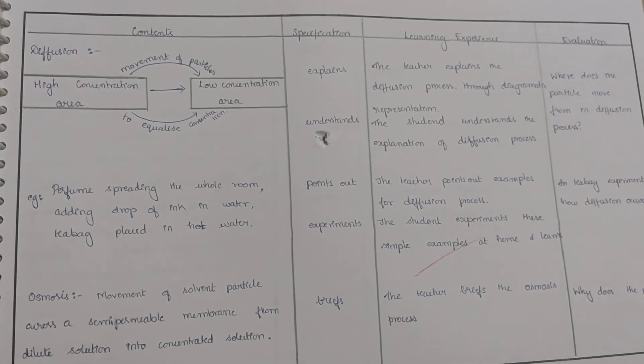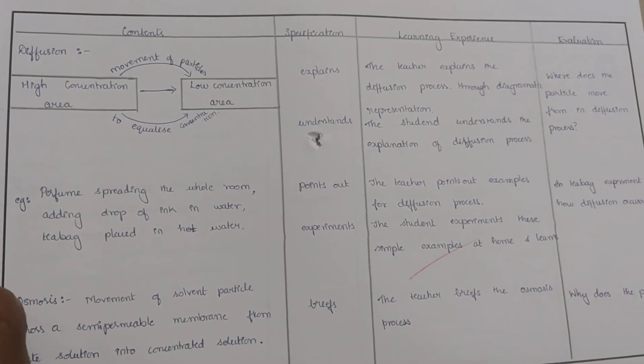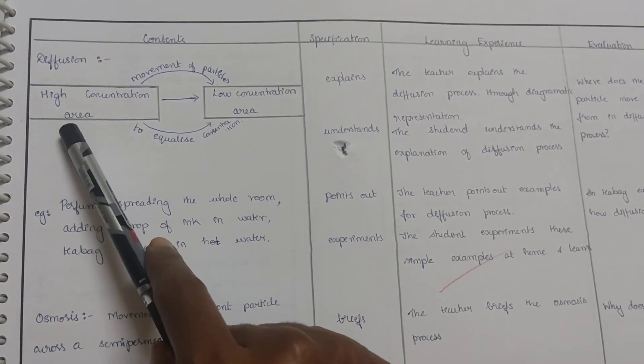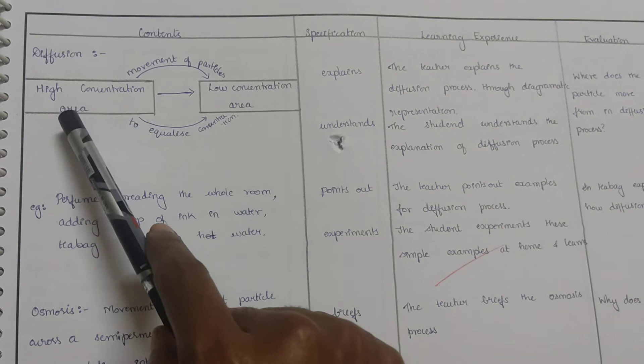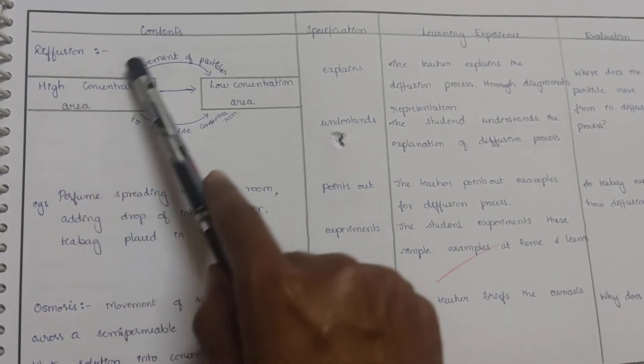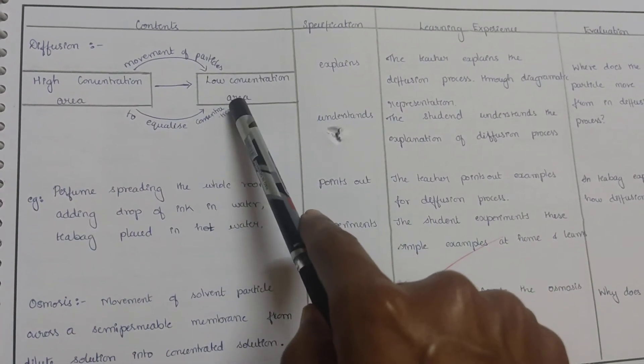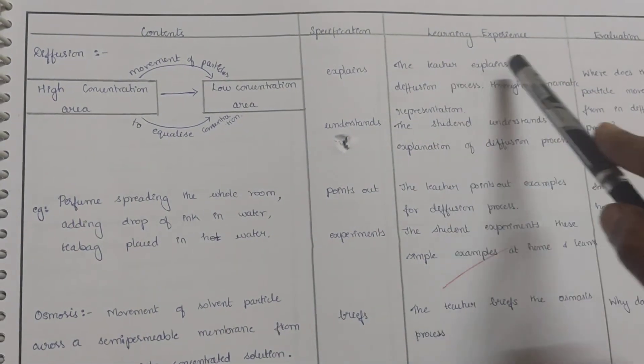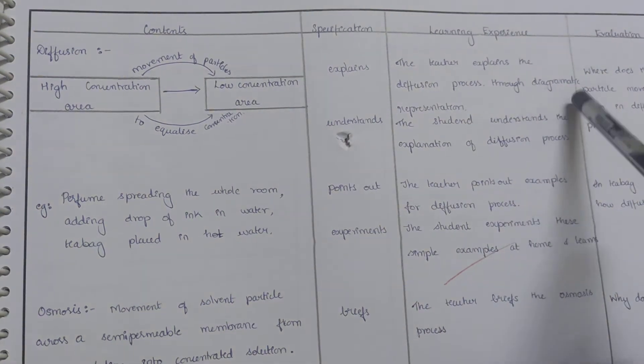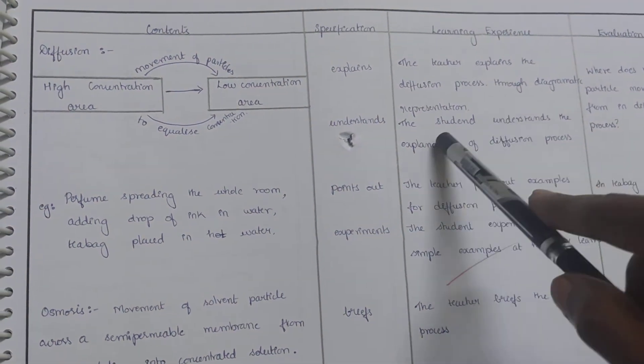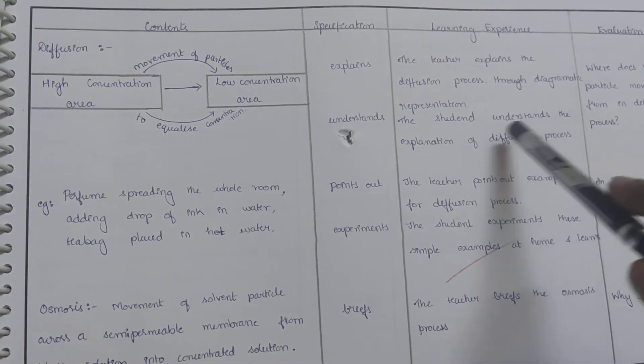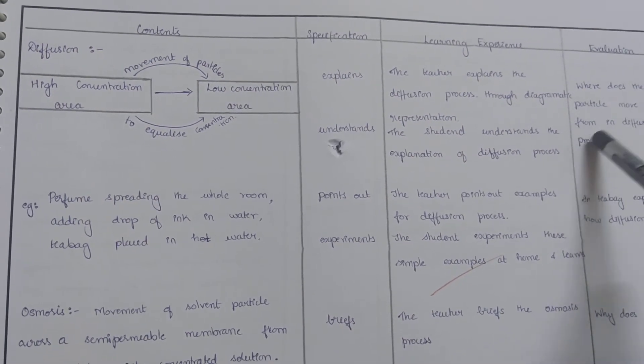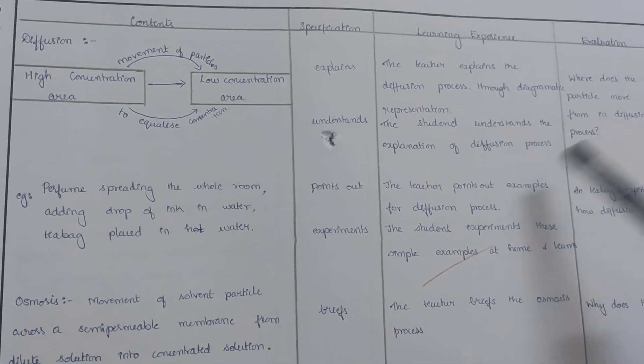Next, we give a small equation presentation by writing diffusion. When the movement of the particles is from high concentration area to low concentration area, it is to equalize the concentration. The teacher explains the diffusion process through diagrammatic representation and the student understands the explanation of diffusion process. Where does the particle move from in diffusion process?